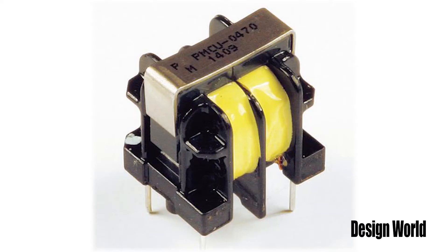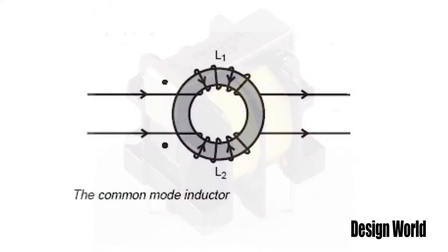The way you usually suppress common mode noise is to install some kind of filter on both lines conducting the noise. One kind of filter you can use is called a common mode choke. It's basically a choke or inductor containing two identical windings.